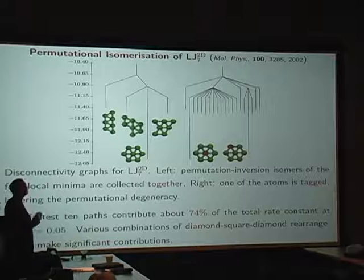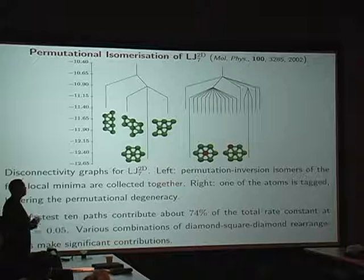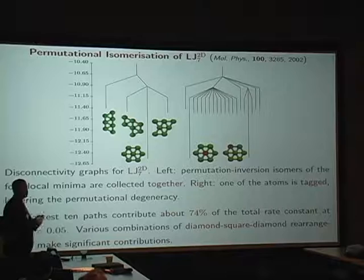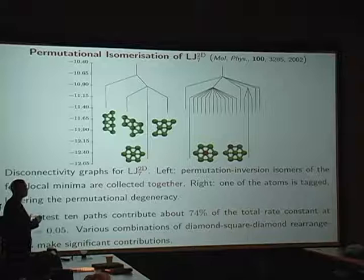I think this is a nice pedagogical example because we discussed permutation inversion isomerization earlier. So here's a really simple system. It's two dimensions. Do you know what the Leonard-Jones potential is? Everybody happy with that? Something with a well. Okay. So John Leonard-Jones. There are only four minima. Here they are. And I've lumped together all the permutation inversion isomers. You don't get inversion, actually, for two dimensions. So these are all the permutational isomers of each one. And then if you distinguish one atom in red, you're going to split this graph according to how many symmetry distinct sites there are.